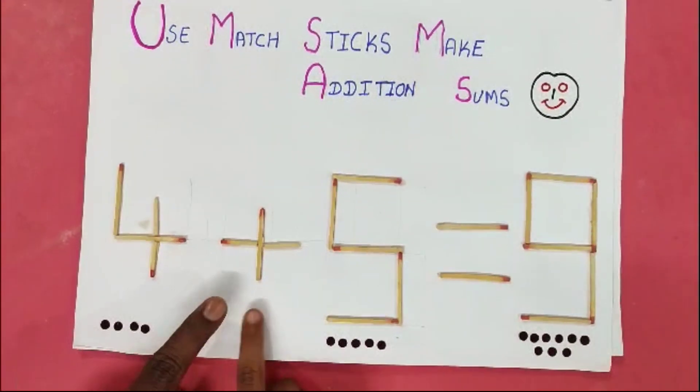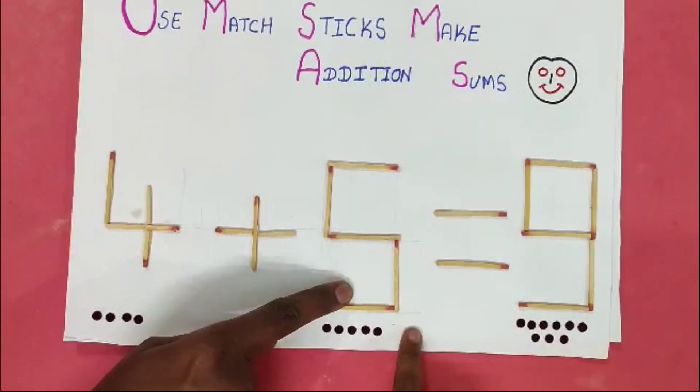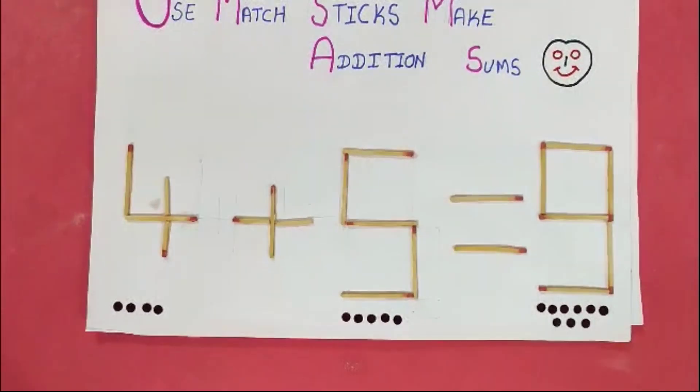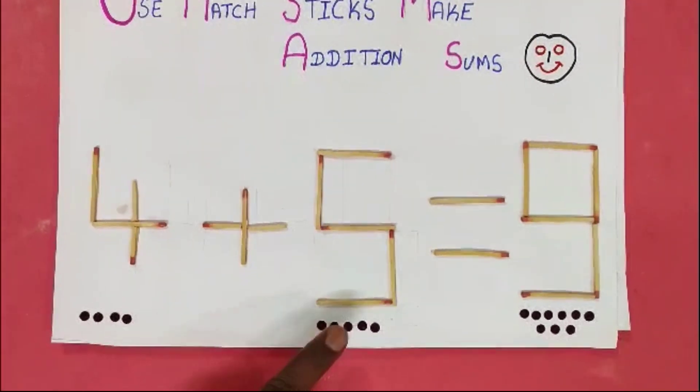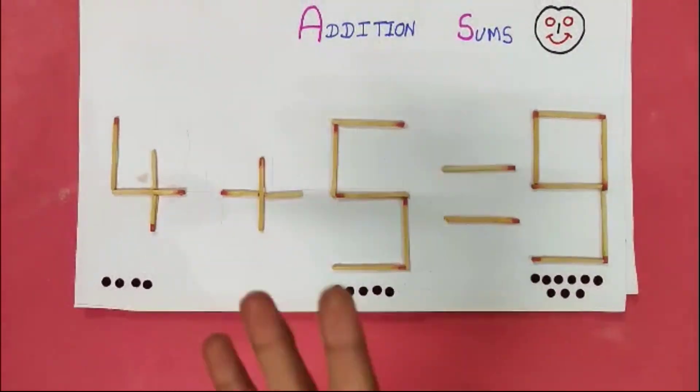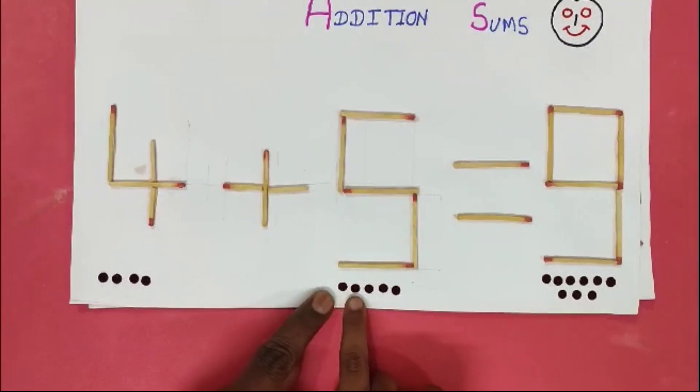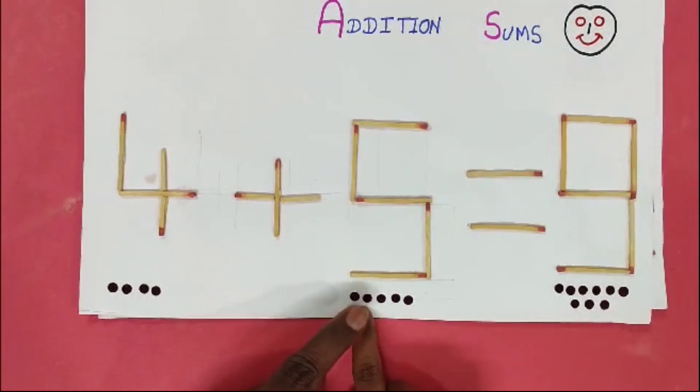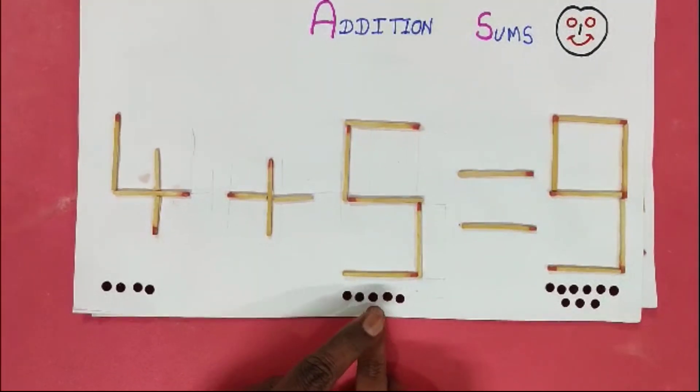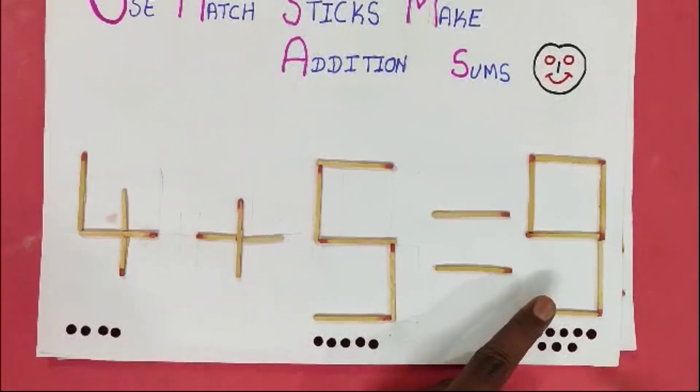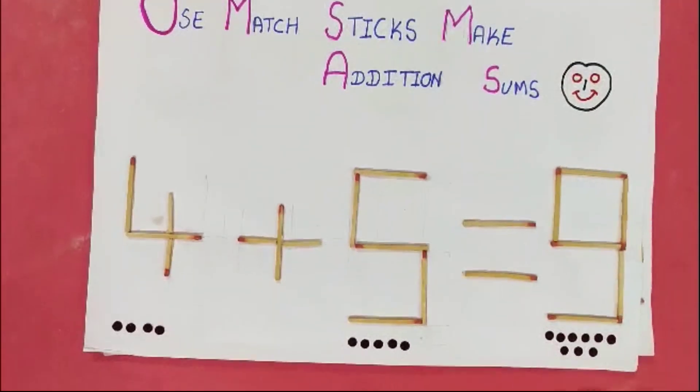4 plus 5. Keep 4 in mind, 5 in the fingers. After 4: 5, 6, 7, 8, 9. Answer? 9. Very good.